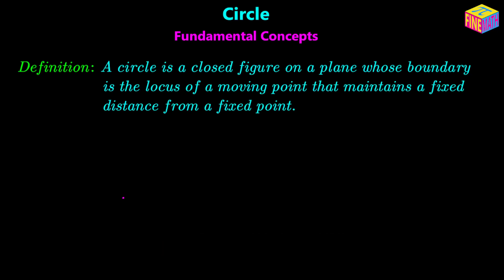In this video, it would make sense to start with the definition of circle. First we need to understand what a circle is. Here I have a formal definition of circle. A circle is a closed figure on a plane whose boundary is the locus of a moving point that maintains a fixed distance from a fixed point. So two things we have to understand: first of all, a circle is a two-dimensional figure, and it is bounded by the locus of a point that maintains a fixed distance from a fixed point.